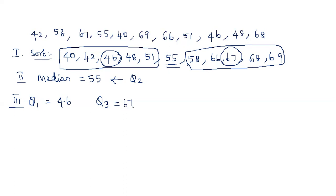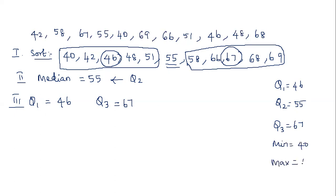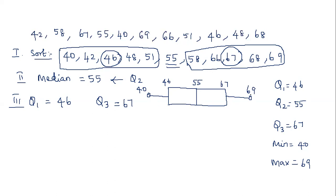We have identified that Q1 is 46, Q2 is 55, and Q3 is 67. The minimum value of the data set is 40 and the maximum value is 69. With these five values — 40, 46, 55, 67, and 69 — we can draw a box plot. This is the 5-number summary.